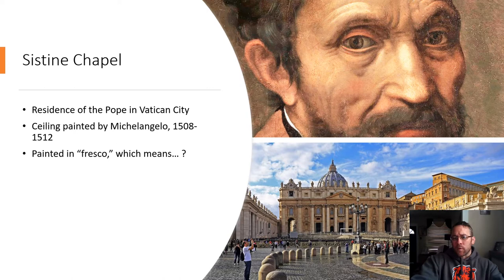David was this young shepherd. You have these giants coming after him and his people, everybody else is getting killed, he takes a stone, slings it at Goliath's head, kills him — and becomes king.